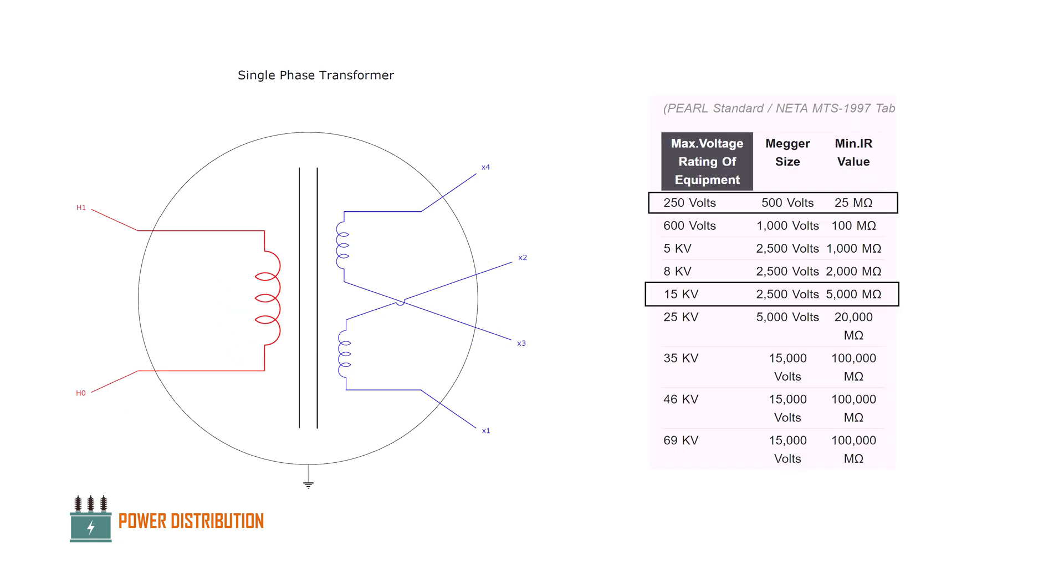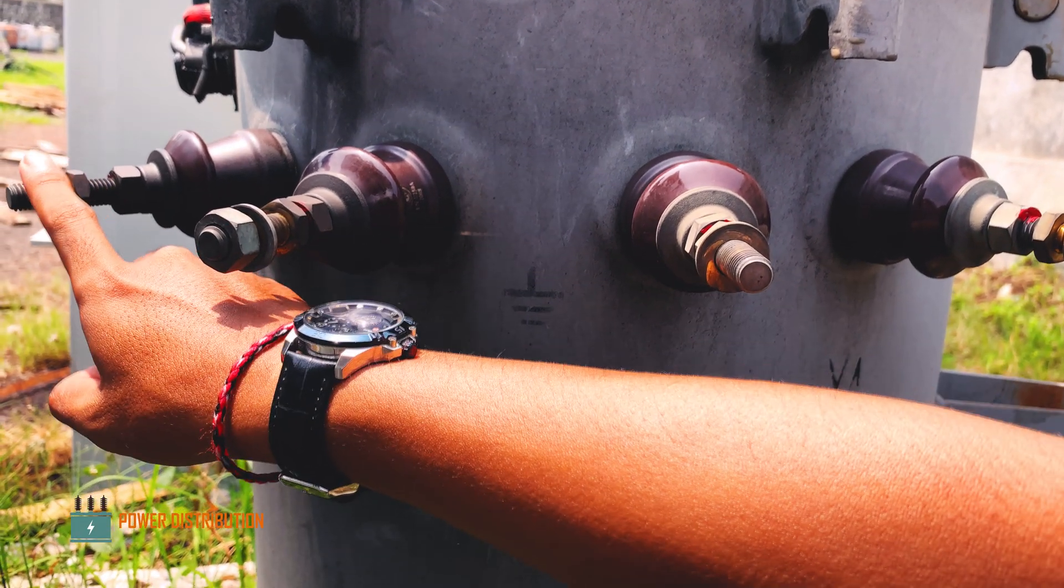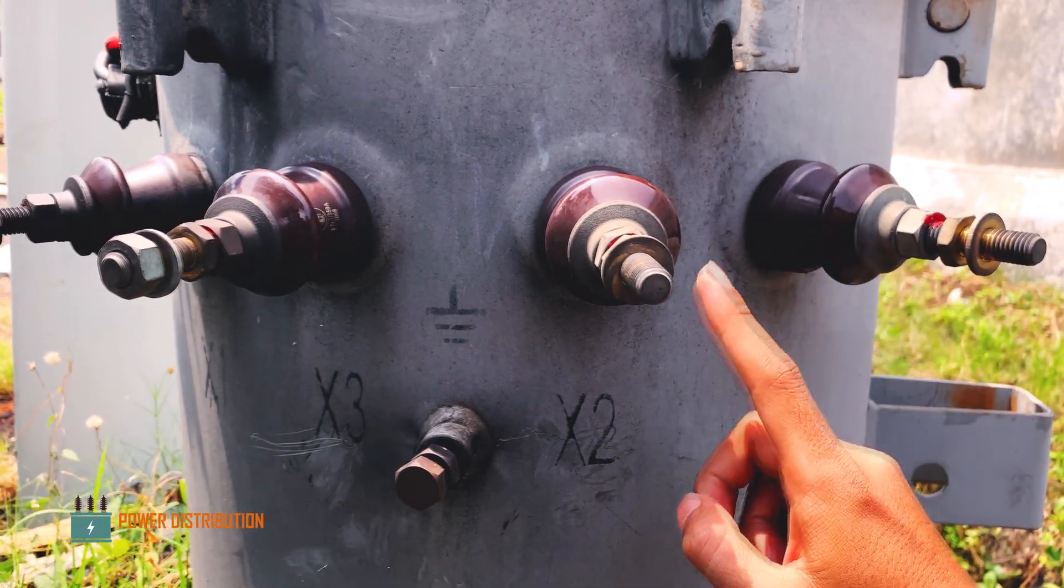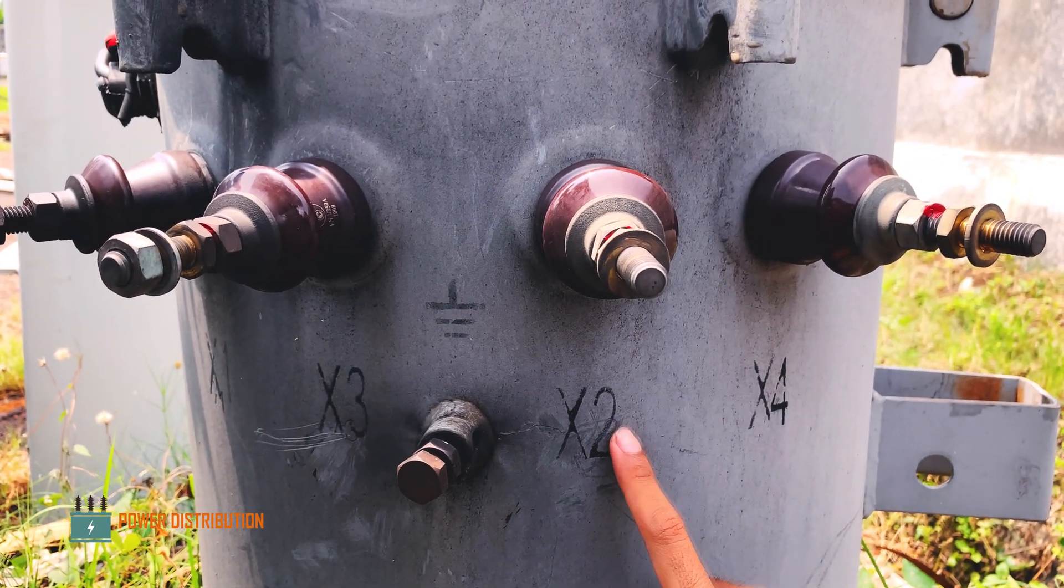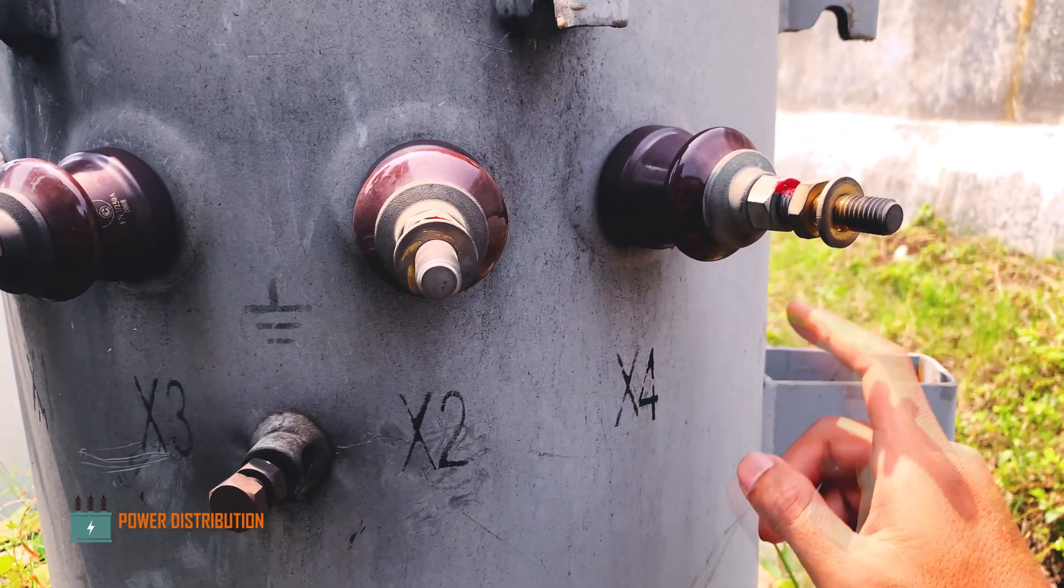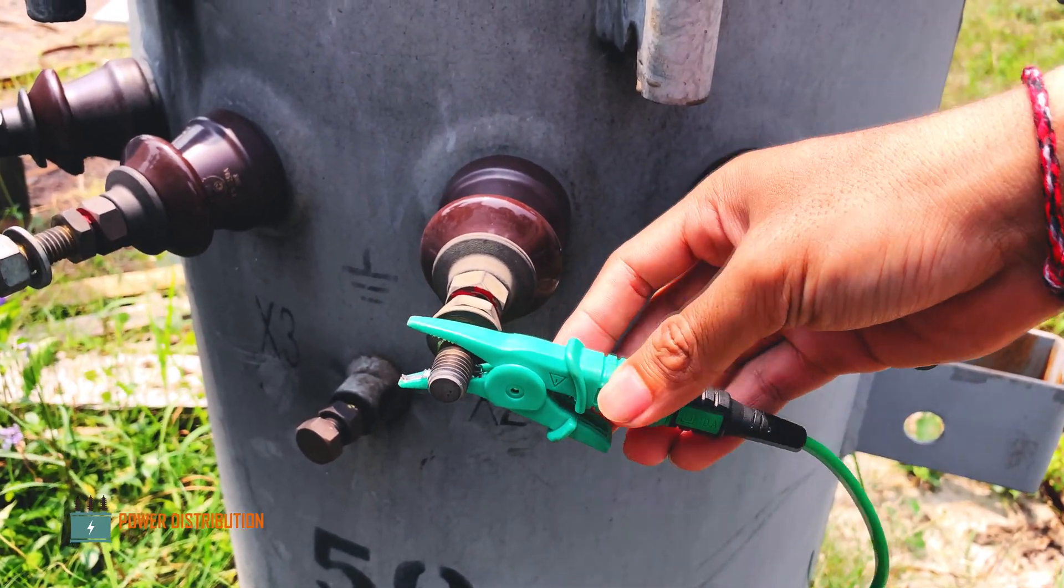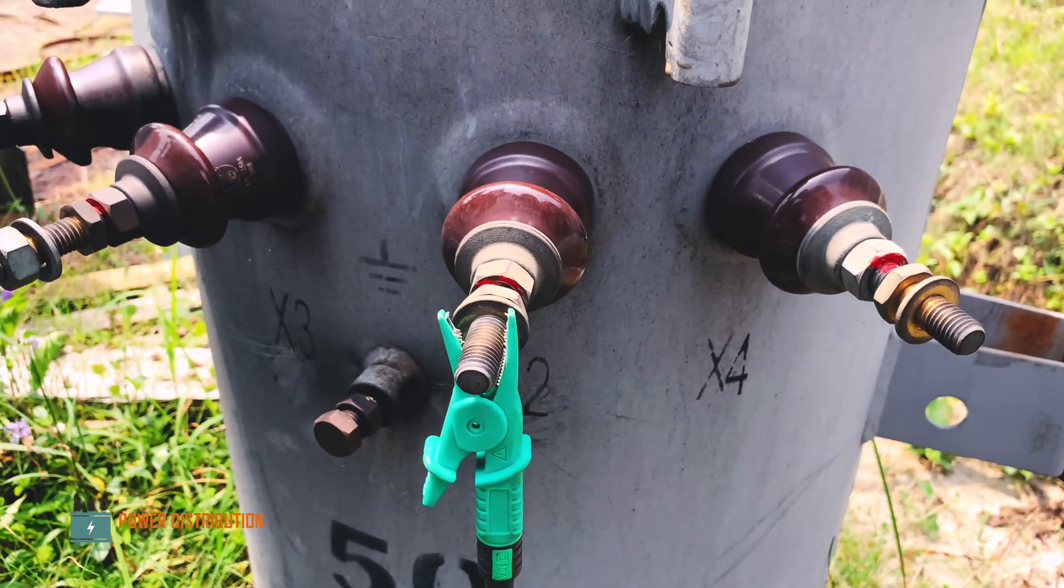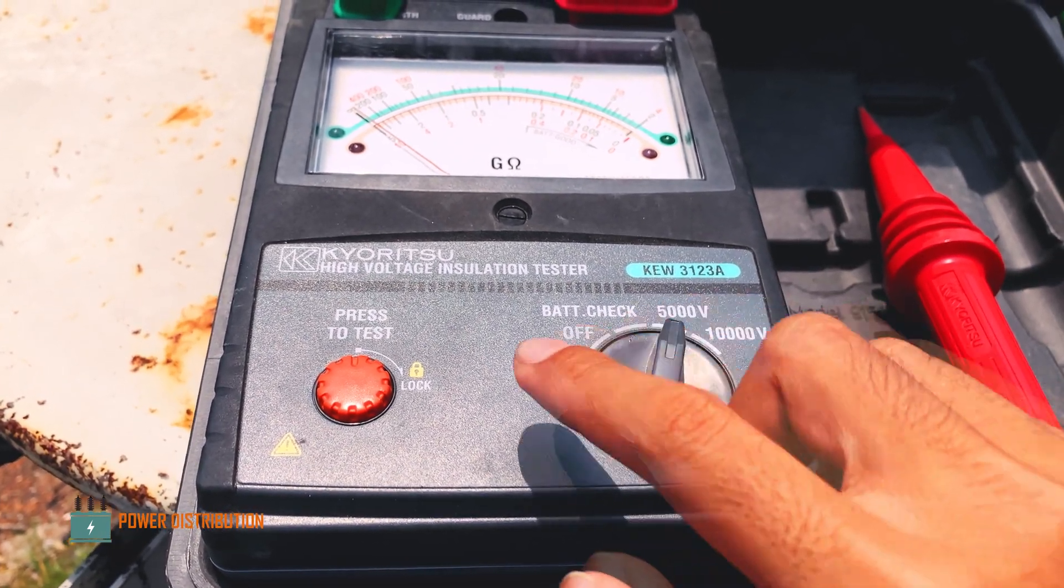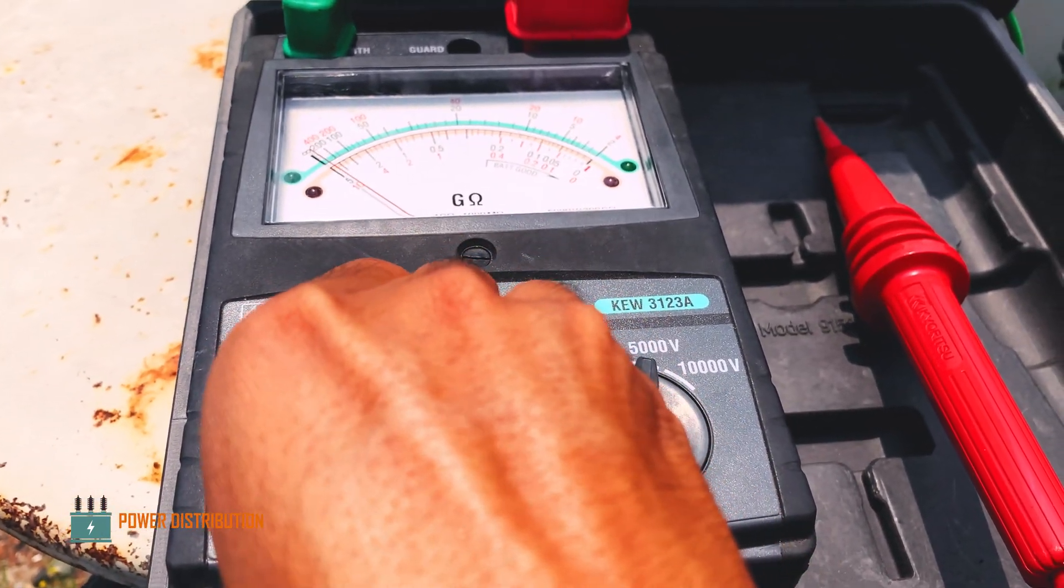Since the line to line voltage between secondary terminals is around 200 volts, the minimum insulation resistance value we need to see is around 25 megaohms. From the diagram we know that X1 goes into X2 and X3 goes into X4. Now, the first secondary winding against the primary: by placing the earth probe on the secondary, put the tester on 5000 volts, and press test.